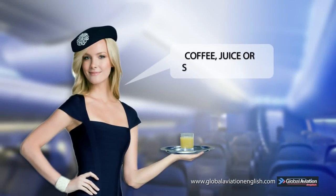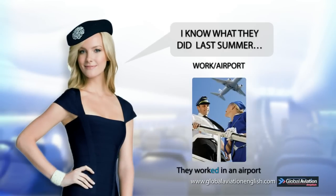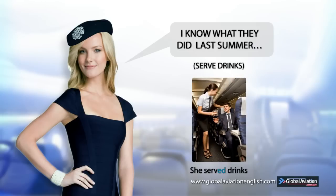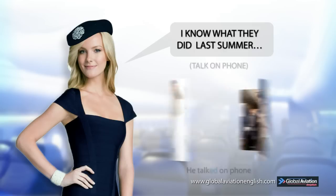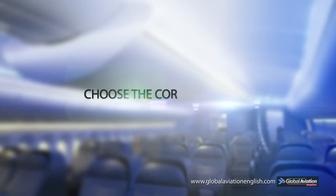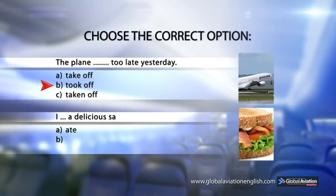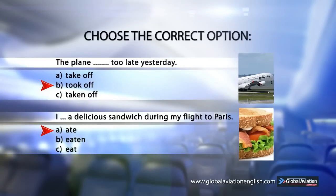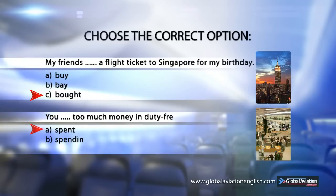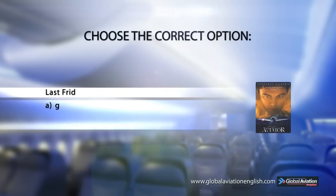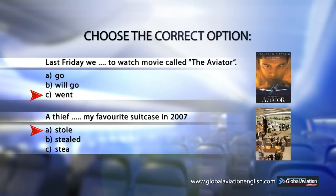Some examples. I know what they did last summer — they worked in an airport. She served drinks. They smiled on board. He talked on the phone. He proposed to her. Choose the correct option: The plane took off too late yesterday. I ate a delicious sandwich during my flight to Paris. My friends bought a flight ticket to Singapore for my birthday. You spent too much money in duty-free shops last time. Last Friday, we went to watch the movie called The Aviator. A thief stole my favorite suitcase in 2007.